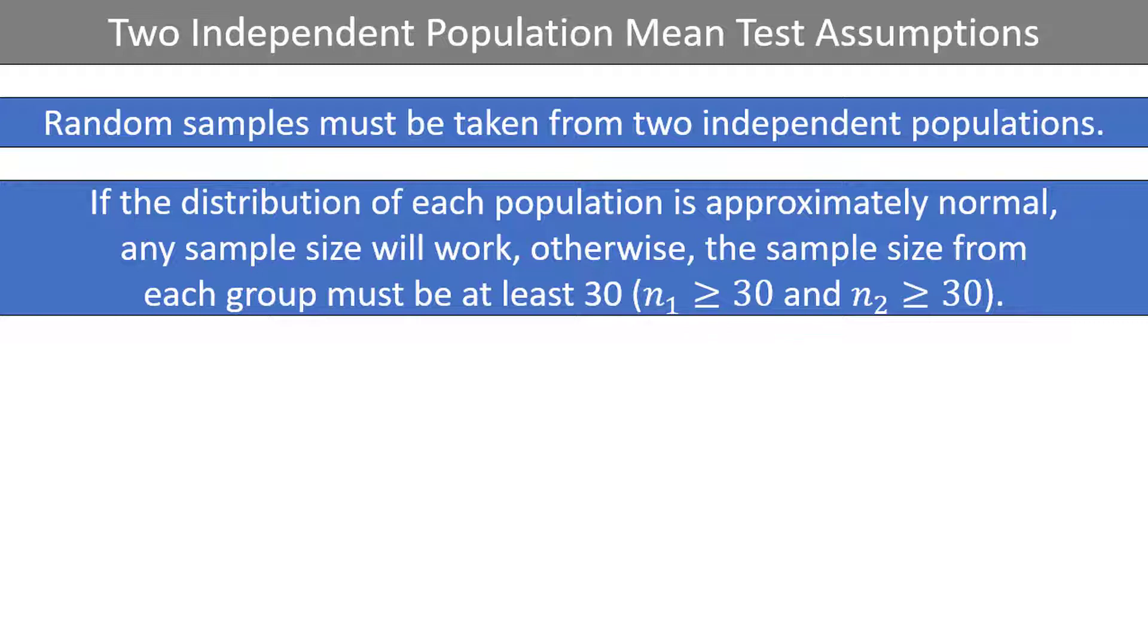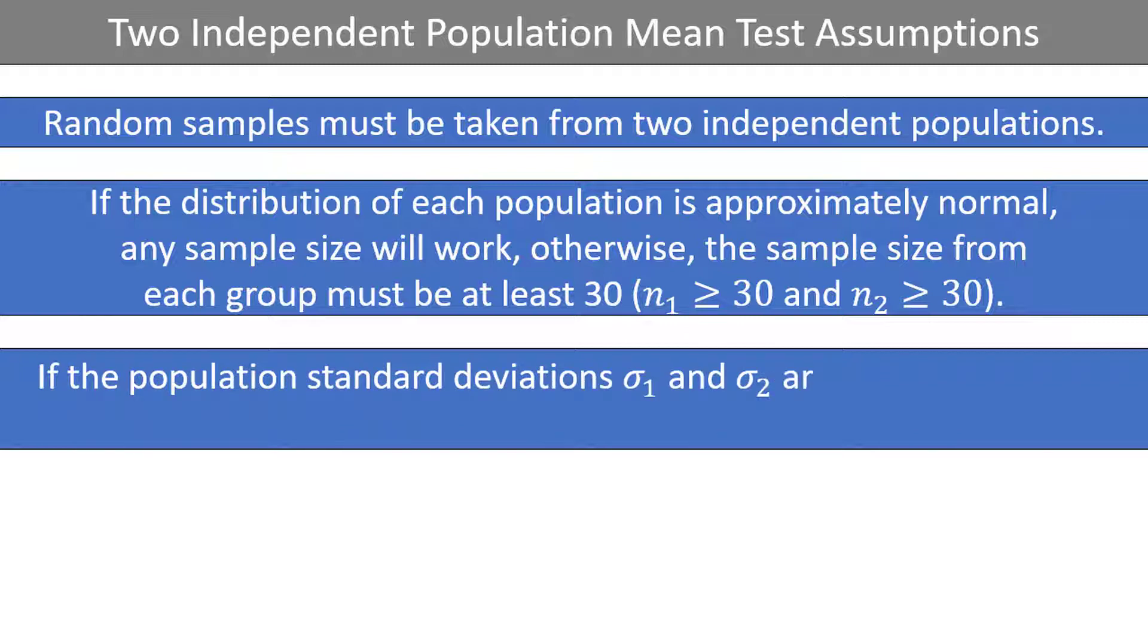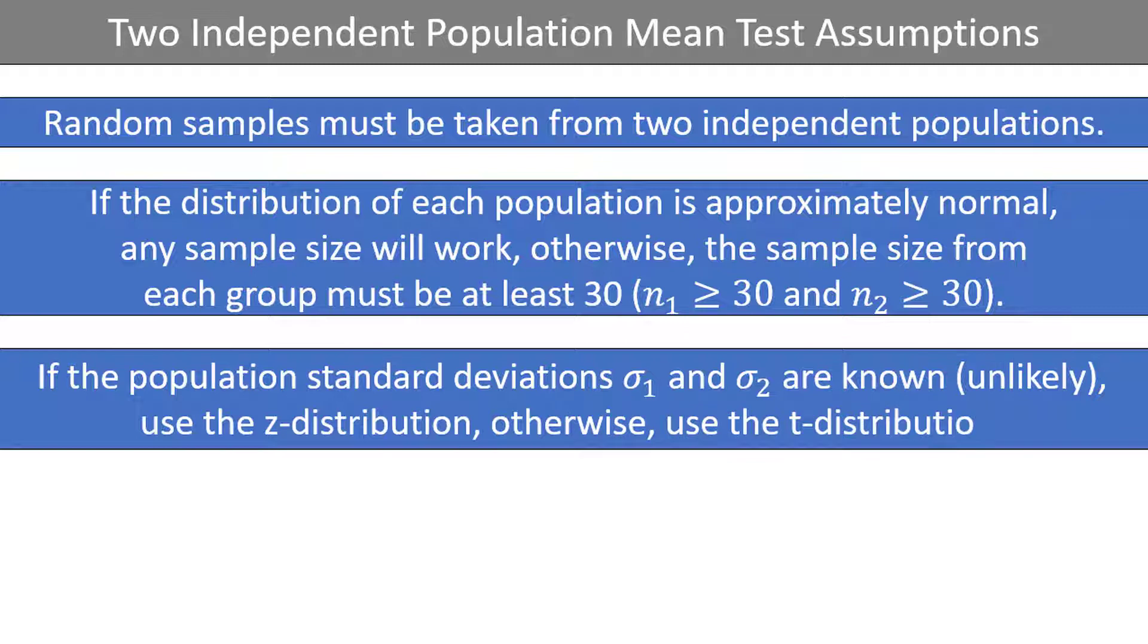Thirdly, if the population standard deviations are known for both populations, which is unlikely, you should use the z-distribution. Otherwise, you should use the t-distribution. As it is so unrealistic to know the population standard deviation, I always use the t-distribution for two independent mean tests, but know that some instructors may have you do the test with the z-distribution.